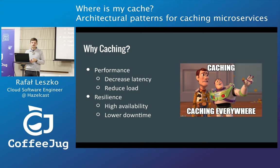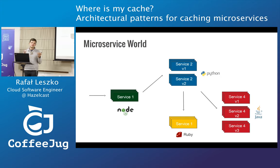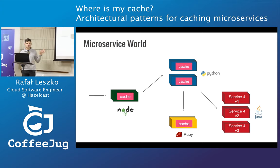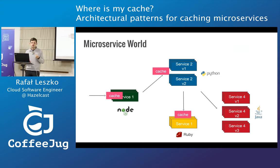How does it all look like in the microservice world? So this is like a classic microservice architecture. We have some services that are written in different programming languages, they have versions, they use each other — generally a mess. Now the question is, where is the right place to put your cache? Is it inside of the service or as a separate unit in our architecture, like a cache server? Or should we put cache in front of each service? That is what this talk will be about.